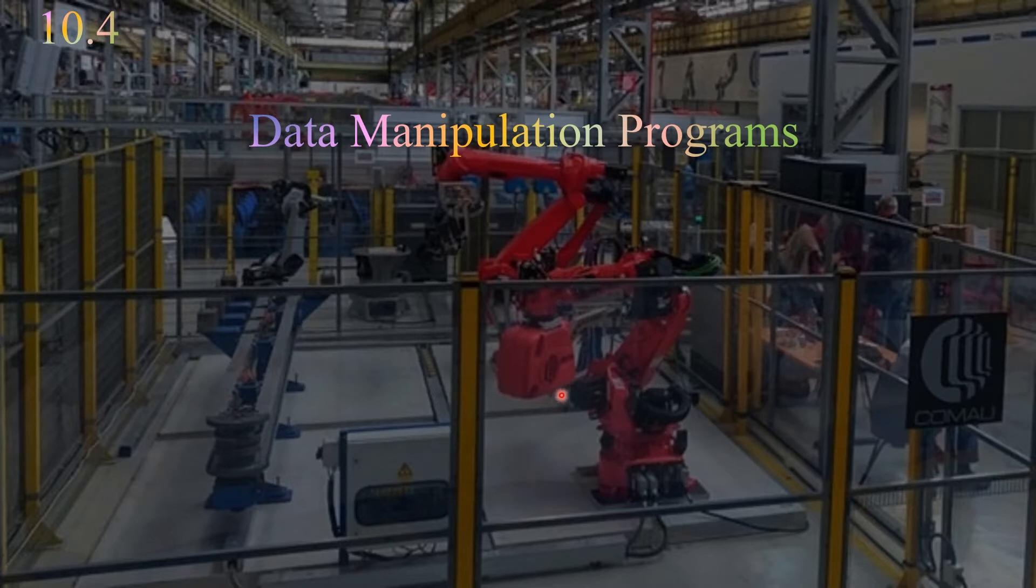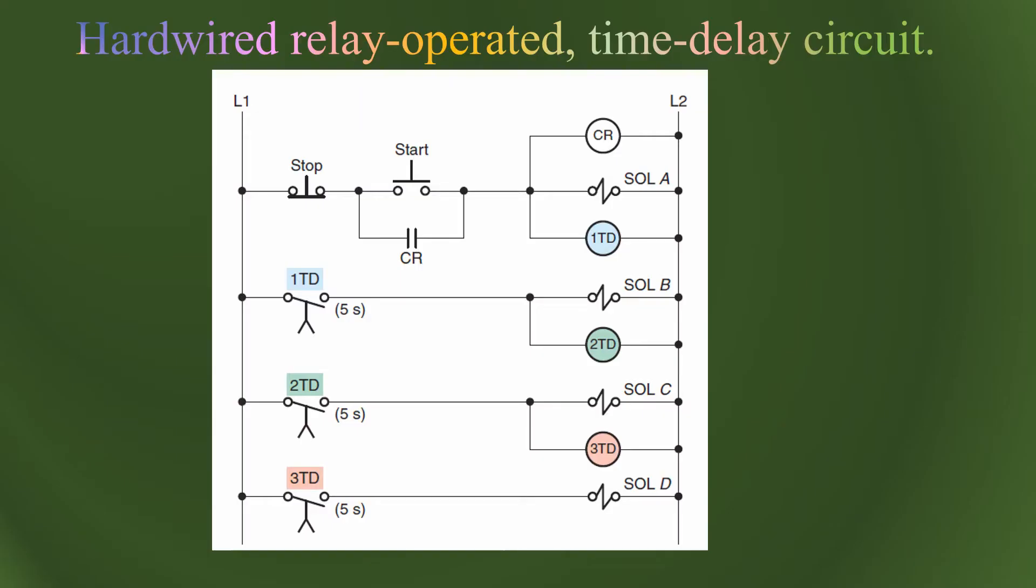Here is the relay-based automation circuit for a task. We have solenoid A and there is a control relay. This circuit is fundamentally for interlocking. As soon as we click the start switch, the solenoid will be operated and the control relay will be excited.